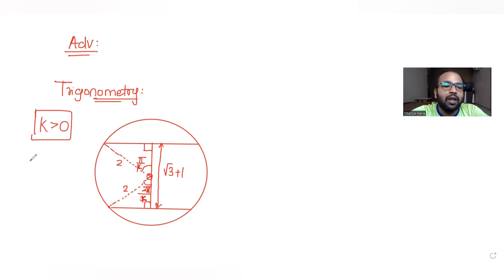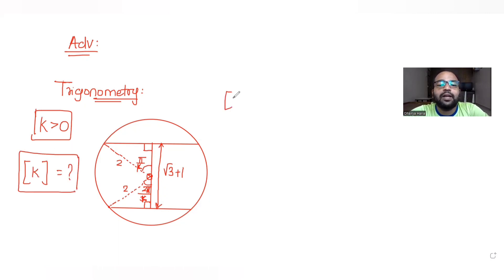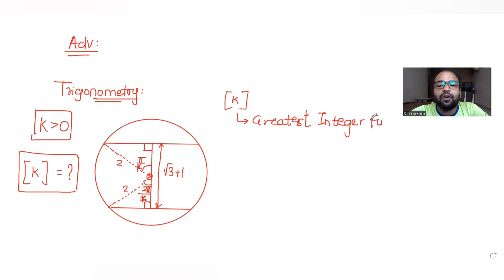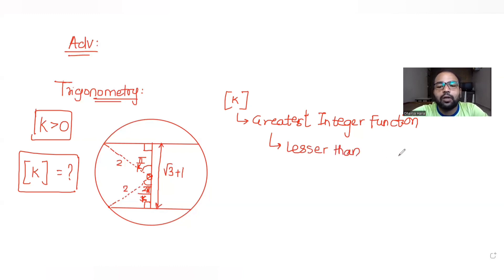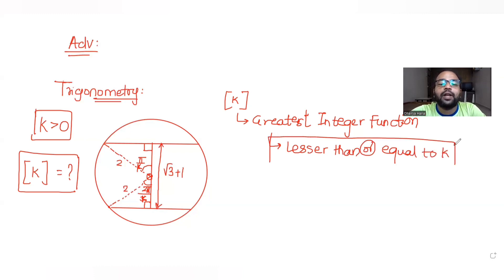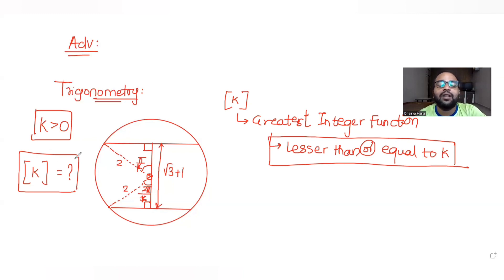We have been asked to find the value of [k], where the square bracket notation is the greatest integer function. The greatest integer function means you find the greatest integer which is less than or equal to k. So let's find the value of k first, and then we'll apply the greatest integer function.